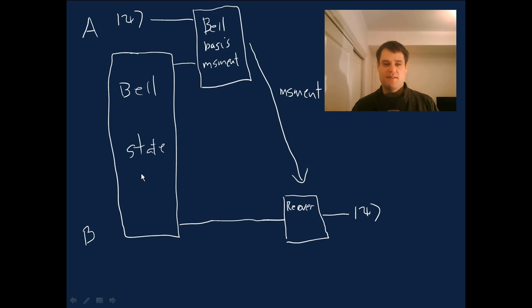Of course, we also needed this pre-shared resource, the bell state. But that was fixed and independent of psi, and in fact could have been prepared long before Alice came into possession of the state psi. So somehow, this is really quite a strange fact.